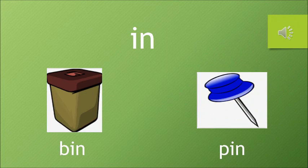IN — sound of I is E, sound of N is N, so it is IN. And the words are BIN and PIN. BIN is a dustbin where we throw all our trash. And PIN — can you see this pointed thing? It is called a PIN. This is a board pin, which we use when we put up our charts on the board. So the words are BIN and PIN.